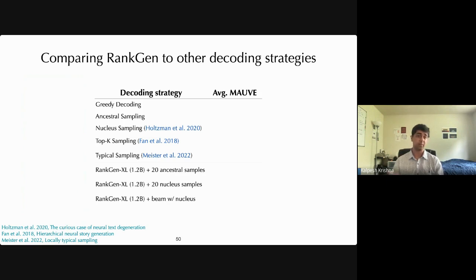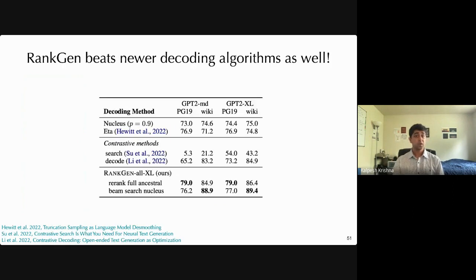So we compare RankGen to several other decoding alternatives like greedy decoding, ancestral sampling, nucleus sampling, typical and top-k sampling. We find that greedy decoding just gets a MAUVE score of about 15.4 due to its repetitive nature, whereas using truncated sampling methods like nucleus sampling boosts this to about 77 MAUVE, and this has also been shown by some prior work. However, using RankGen to re-rank 20 nucleus samples boosts this performance to 82.6 MAUVE with ancestral samples and 83.4 with nucleus samples. And finally, if we use BeamSearch, we can improve this even further to 85.0 MAUVE. Now, after the release of RankGen, several other newer decoding strategies were introduced. Contrastive search, contrastive decoding, as well as eta sampling, all of them roughly in October 2022. We reran RankGen and compared RankGen against all these newer decoding strategies. We found that RankGen continues to outperform all these newer methods, as shown in this table here.